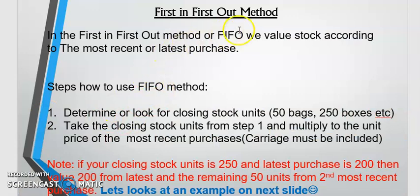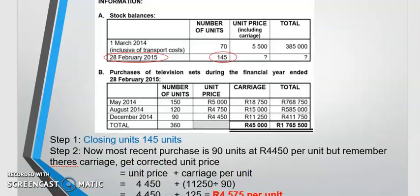This PowerPoint teaches you how to calculate closing stock. The steps of the first in first out method — the most important thing is to look for the closing stock units. Once you get the closing stock units, you use that to value your stock, and you'll value it according to the most recent purchase. If there's not enough in the most recent purchase, you use the second most recent purchase.